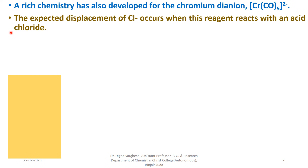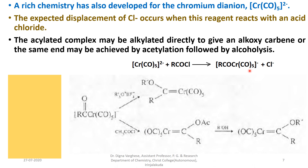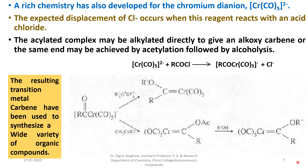A rich chemistry has also developed for chromium carbonylate, CrCO5(2-), similar to Collman's reagent. The expected displacement of Cl- occurs when this reagent reacts with an acid chloride: CrCO5(2-) reacts with an acid chloride, giving an acylated complex. This acylated complex may be alkylated directly to give an alkoxy carbene, or the same product may be achieved by acetylation followed by hydrolysis with an alcohol to give an alkoxy carbene. The resulting transition metal carbenes have been used to synthesize a wide variety of organic compounds.